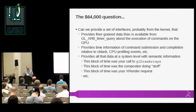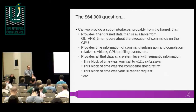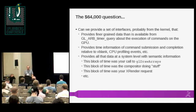We need to get more precise data than what ARB timer query will give about the execution of commands on the GPU. We also need to get information about the execution of those commands relative to other things going on in the system — like when the V-blank is occurring. If a game is missing frame rate, which commands spilled over? What was going on around that time that made them drop a frame?